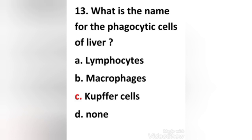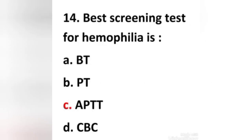Question: What is the name for the phagocytic cells of the liver — (a) lymphocytes, (b) macrophages, (c) Kupffer cells, (d) none. Right answer is option C: Kupffer cells. A Kupffer cell is a phagocytic cell which forms the lining of the sinusoids of the liver and is involved in the breakdown of RBCs.